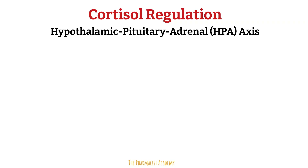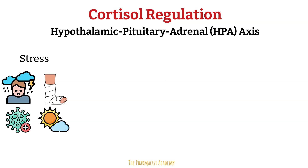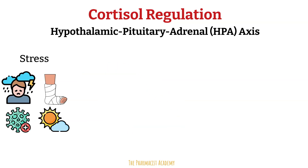In order for the HPA axis to activate, there needs to be some kind of stress. This can be physiological stress like fear, sadness, or anxiety; physical stress like an injury or pain; internal stress like low blood sugar, infection, or low oxygen levels. It can also be activated due to the body's circadian rhythm — a natural internal process that regulates the sleep-wake cycle over a roughly 24-hour period, influenced mainly by light and darkness.